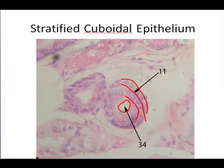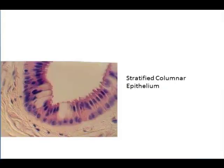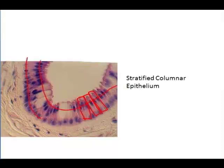This is the duct of a sweat gland. This one is columnar — we can see how long these cells are, and we can also see that there are two distinct layers of nuclei. This is stratified columnar epithelium.